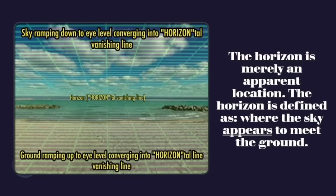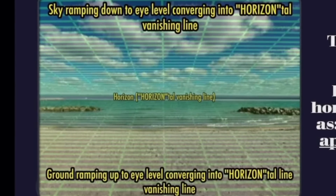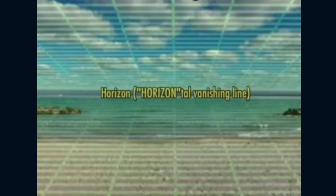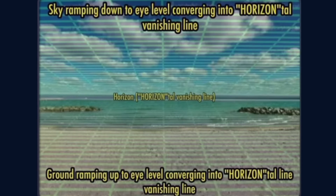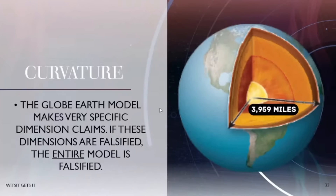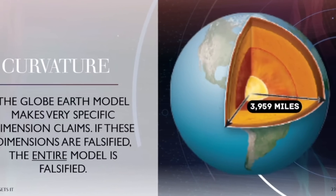The horizon is merely an apparent location, defined as where the sky appears to meet the ground. The sky ramps down to eye level, converging into the horizontal vanishing line — that's where the word 'horizontal' comes from — and the ground ramps up to eye level, also converging into that vanishing line. That vanishing line changes based on atmospheric conditions: sometimes it's closer, sometimes further away, because of turbulence, density, temperature, humidity, and obstruction. If the earth is a sphere with a radius of 3959 miles, then the horizon is where curvature meets the surface.